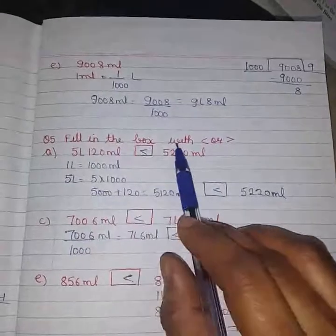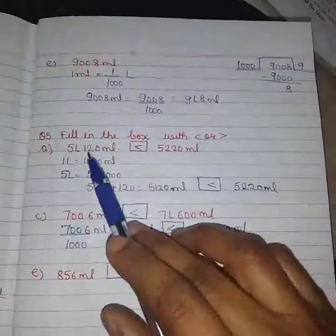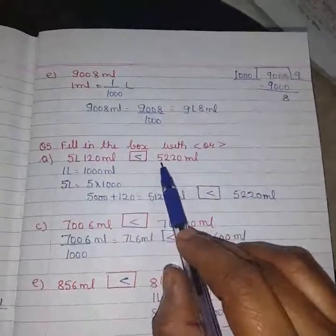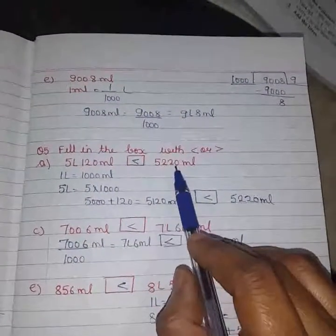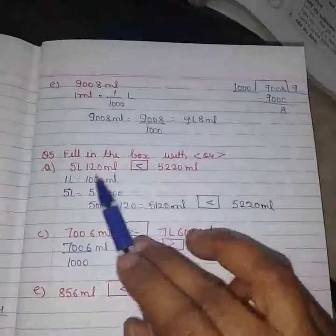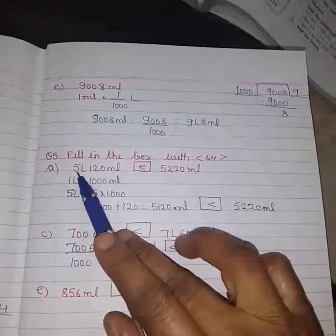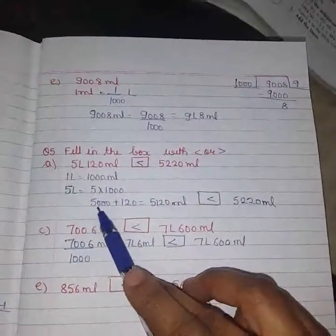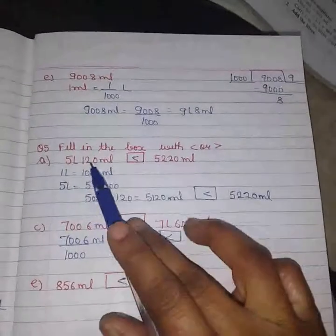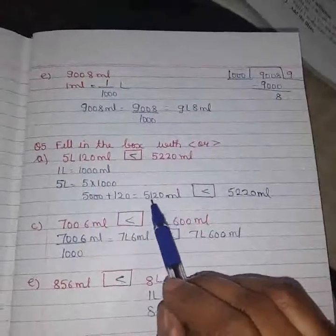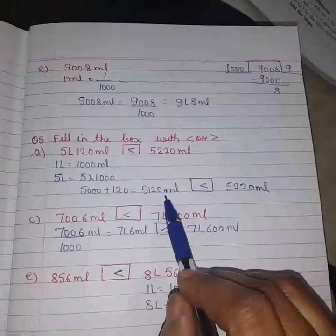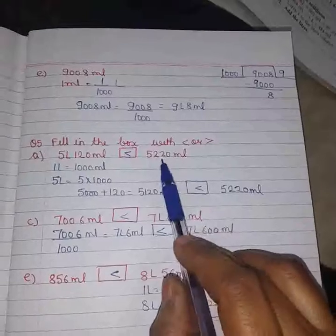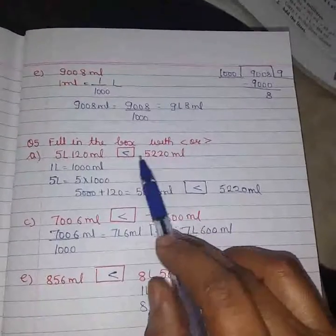Next is fill in the box with greater than or less than sign. Now 5 liters 120 ml and 5220 ml, which one is bigger? First of all we must convert this liter into ml. So 5 liters equals 5000 milliliters, plus 120 becomes 5120 ml. Now compare 5120 and 5220. Obviously 5220 is bigger, so this one is bigger.